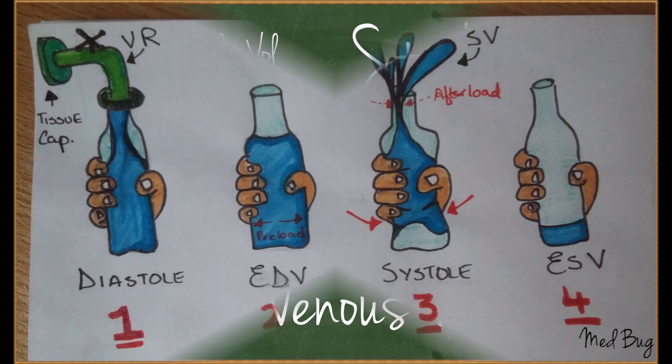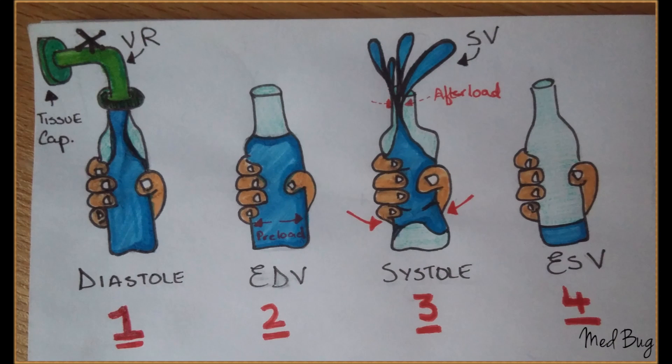So let's start. In this picture, you can see four stages. In stage one, the bottle is in the relaxed state, or in diastole, and it is being filled by water. This water is the venous return which is coming from the tissues.